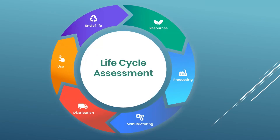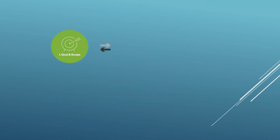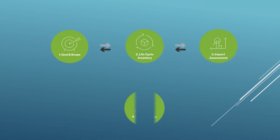The life cycle assessment is a scientific way of assessing the environmental impact on a product's life cycle. Life cycle assessment is divided into four sections: goal and scope definition, life cycle inventory, life cycle impact assessment, and interpretation of the results.